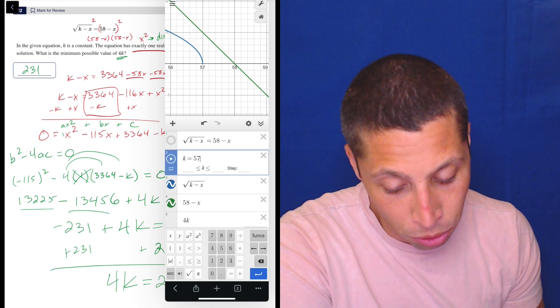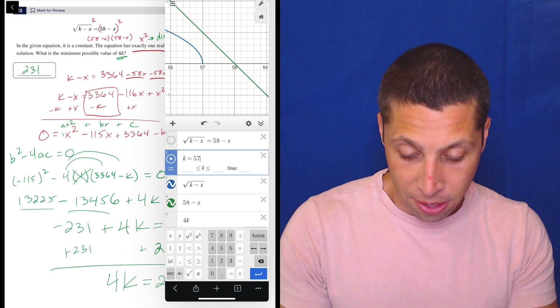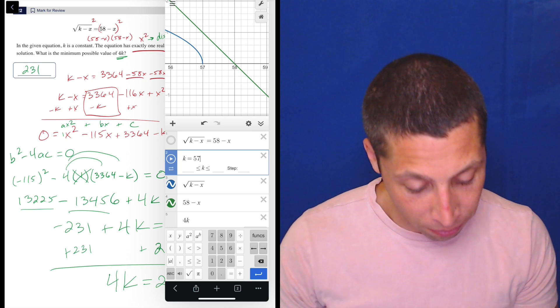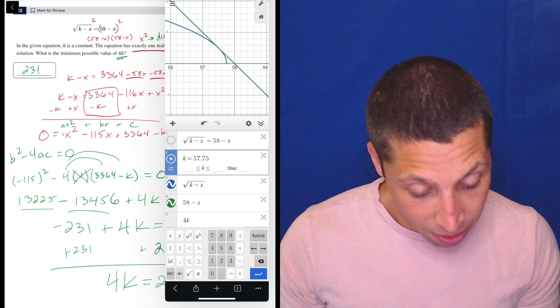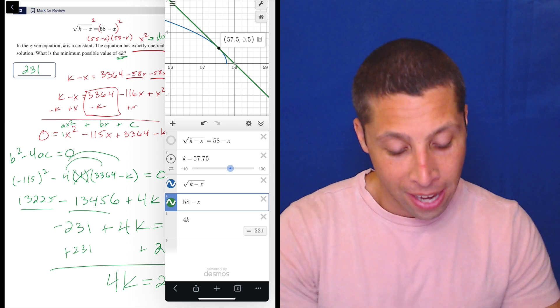But if I do 231 divided by four, I get 57.75. So if I put that in, there it is. Perfect. They just touch once. And that's it. And look at 4k, 231.